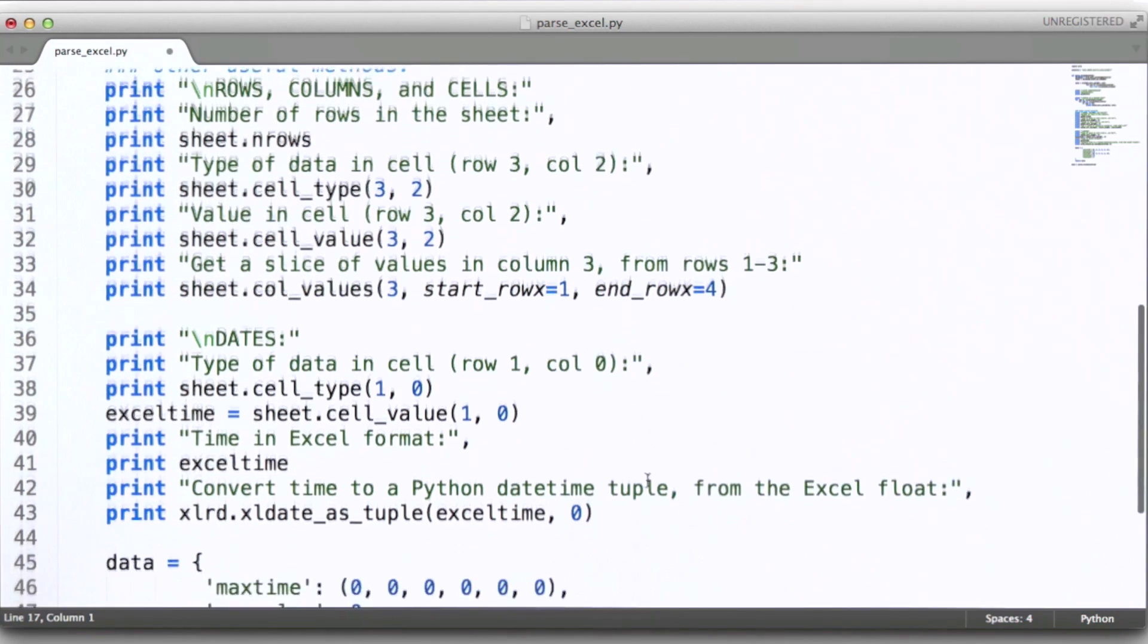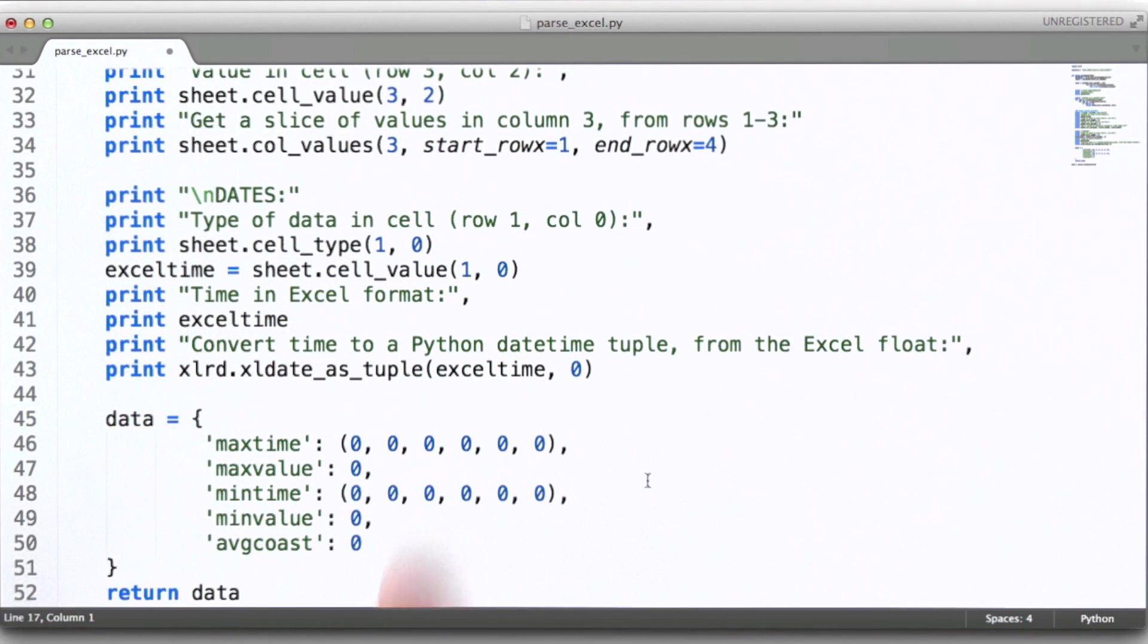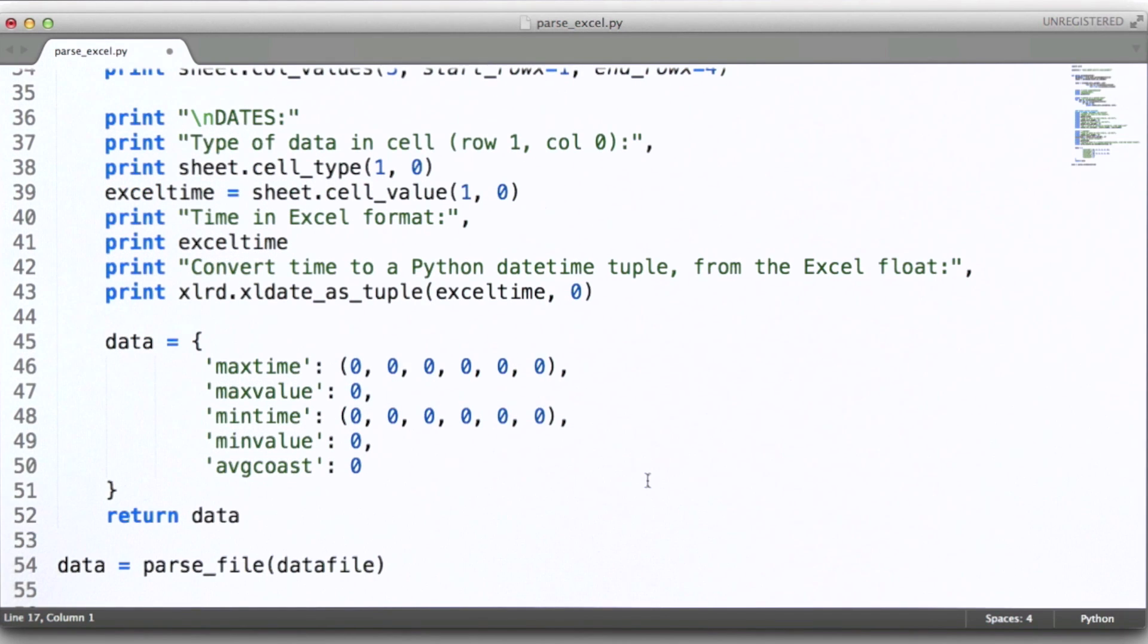So what we can do is use the xlrd.date_as_tuple method to get us that time in a way that allows us to work with it as a date in Python.